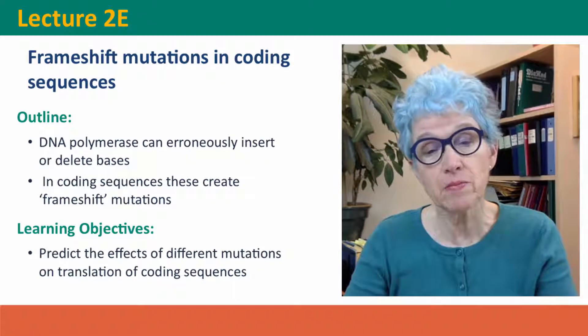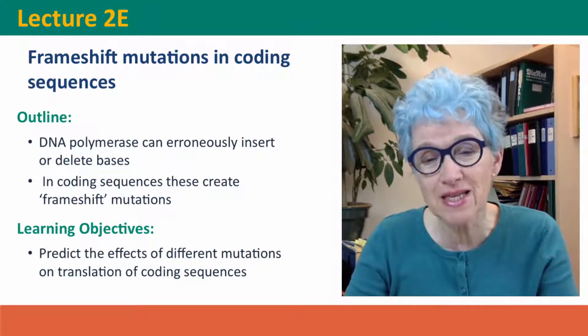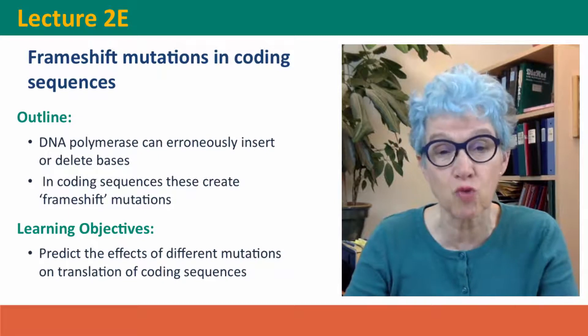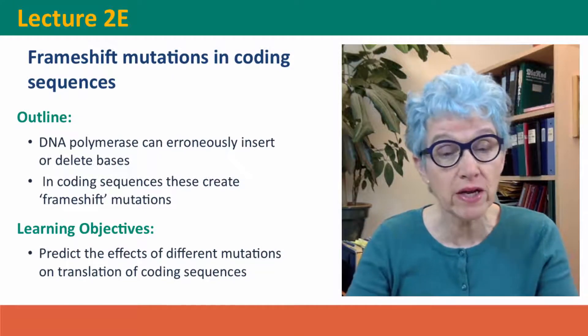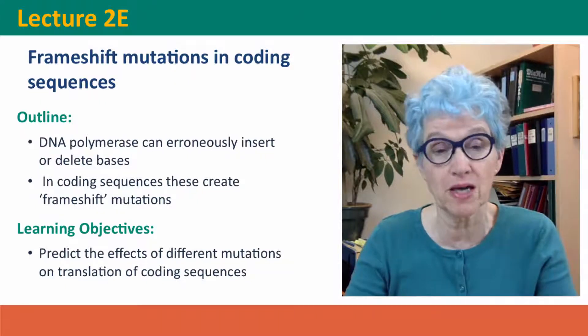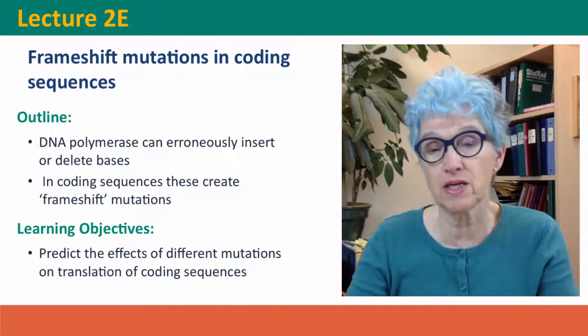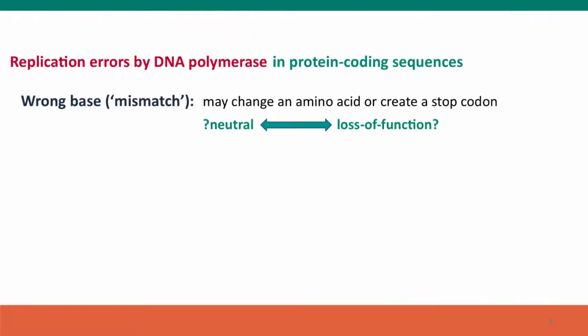These mutations occur when DNA polymerase mistakenly inserts or deletes a base instead of just putting in the wrong base. The consequence is that the reading frame used for translation into amino acids is changed, and the resulting protein is basically garbage. We talked about replication errors by DNA polymerase that usually have little or no effect on function, because the wrong base either doesn't change an amino acid or changes one that's not important for the protein's function. So a substantial fraction of these mutations, even in coding sequences, are functionally neutral.